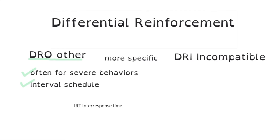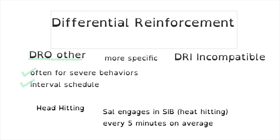With DRO, it's for severe behavior, so any other behavior can happen except for that problem behavior. Let's use head hitting as an example. Say we have Sal and he hits his head about every five minutes — we've collected the data and determined the rate. Since that behavior is very severe and happens a lot, we implement a DRO schedule. We pick his most preferred reinforcer — let's say iPad Thomas the Train videos. Every five minutes, if he doesn't hit his head, he gets a Thomas the Train clip for about 30 seconds. He can do other behaviors; he'll still get his Thomas the Train video as long as he doesn't hit his head.